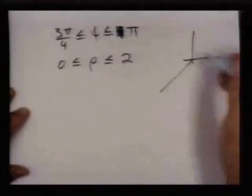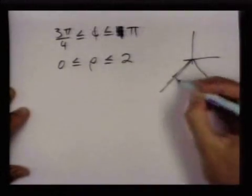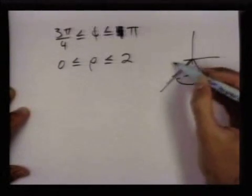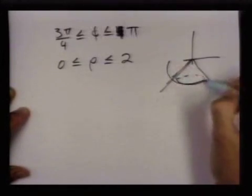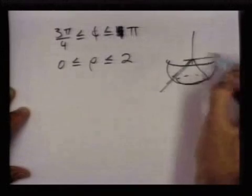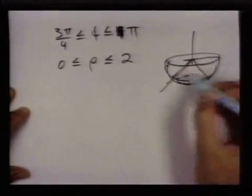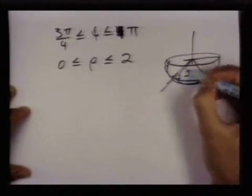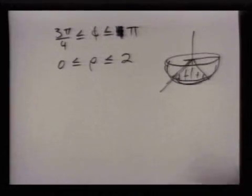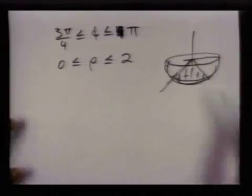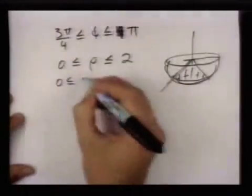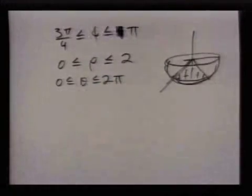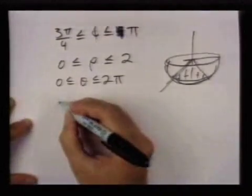Let me draw the picture again - you have this downward facing cone and the bottom half of a sphere of radius two. Theta goes all the way around. So this is quite easy to describe in these spherical coordinates.